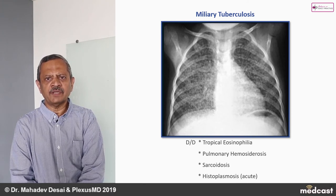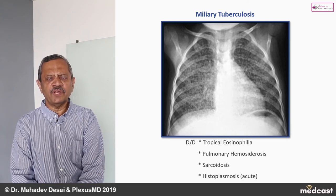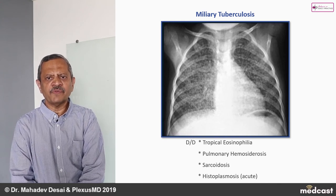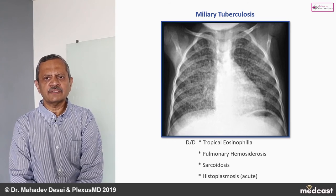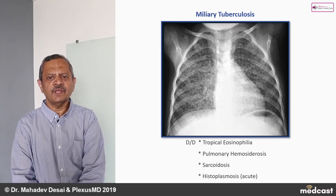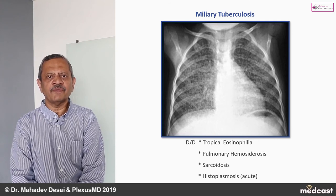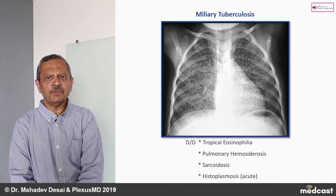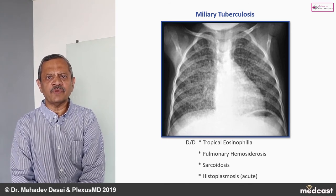Tropical eosinophilia is very common in our country. The patient has a high eosinophil count in the peripheral smear, presents with breathlessness and cough, and responds very well to treatment with diethylcarbamazine.